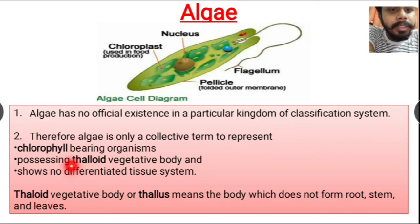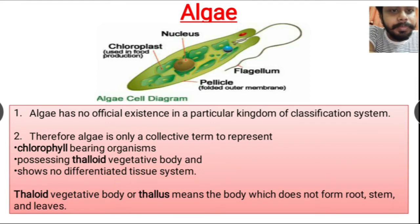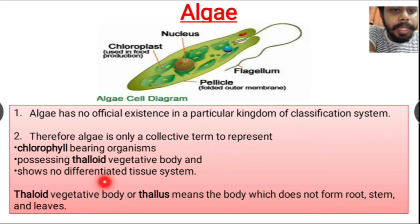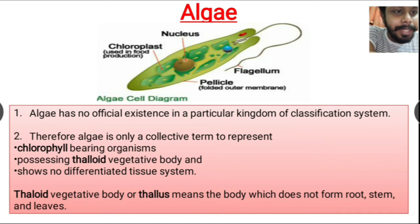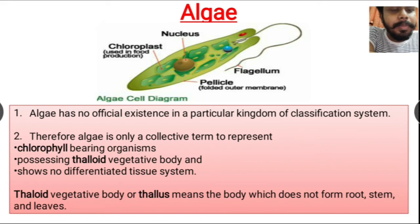Algae possess a thalloid vegetative body and they do not show any differentiated tissue system. Algae are organisms which have chlorophyll, meaning they are capable of doing photosynthesis, and their body does not form root, stem, and leaves like plants — they have a thallus structure.